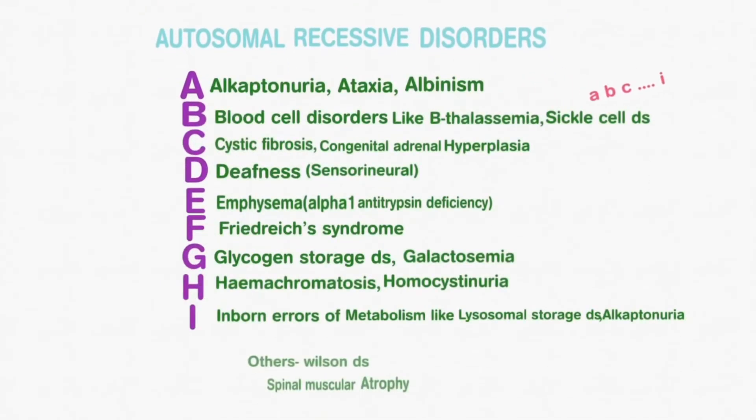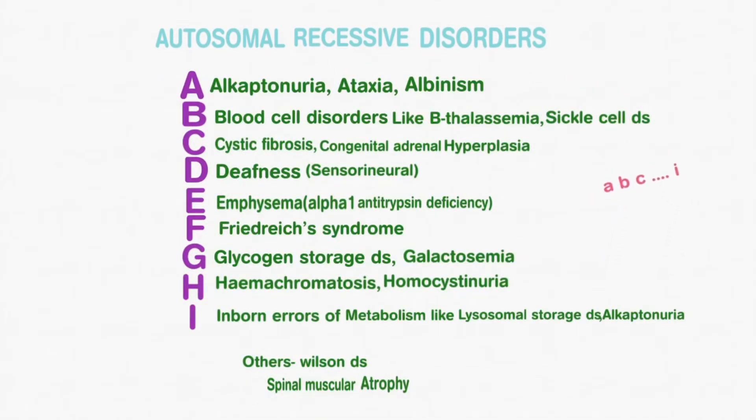Coming to Autosomal Recessive Disorders, we have the mnemonic A, B, C, D, E, F, G, H, I, which stands for the following conditions.